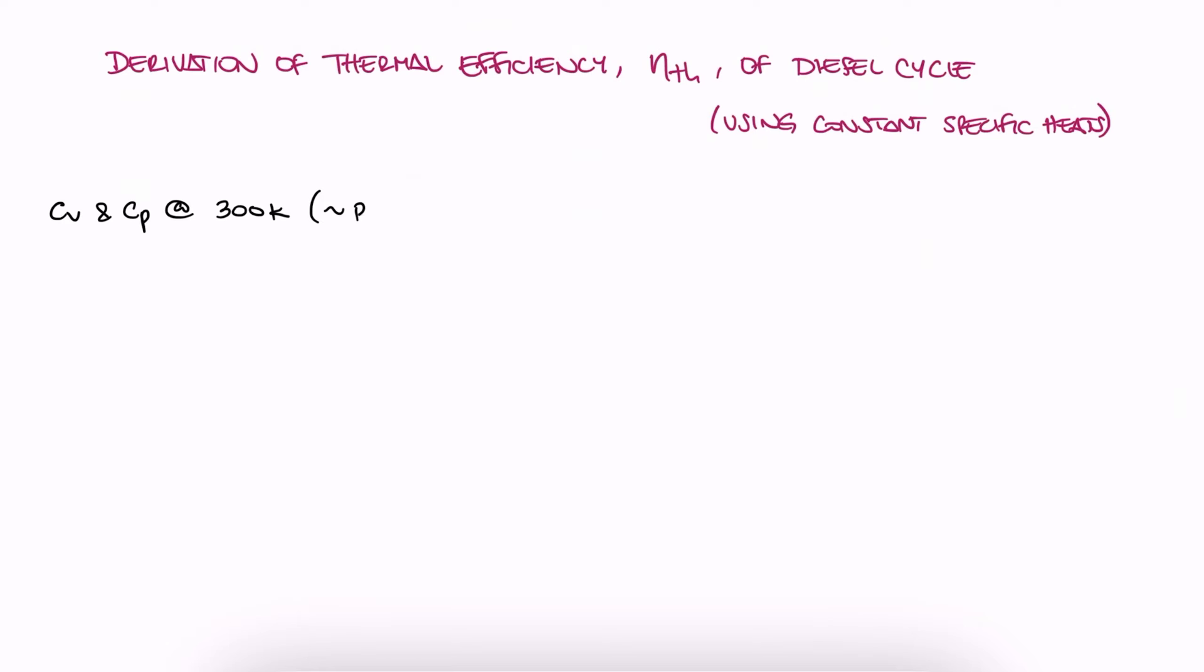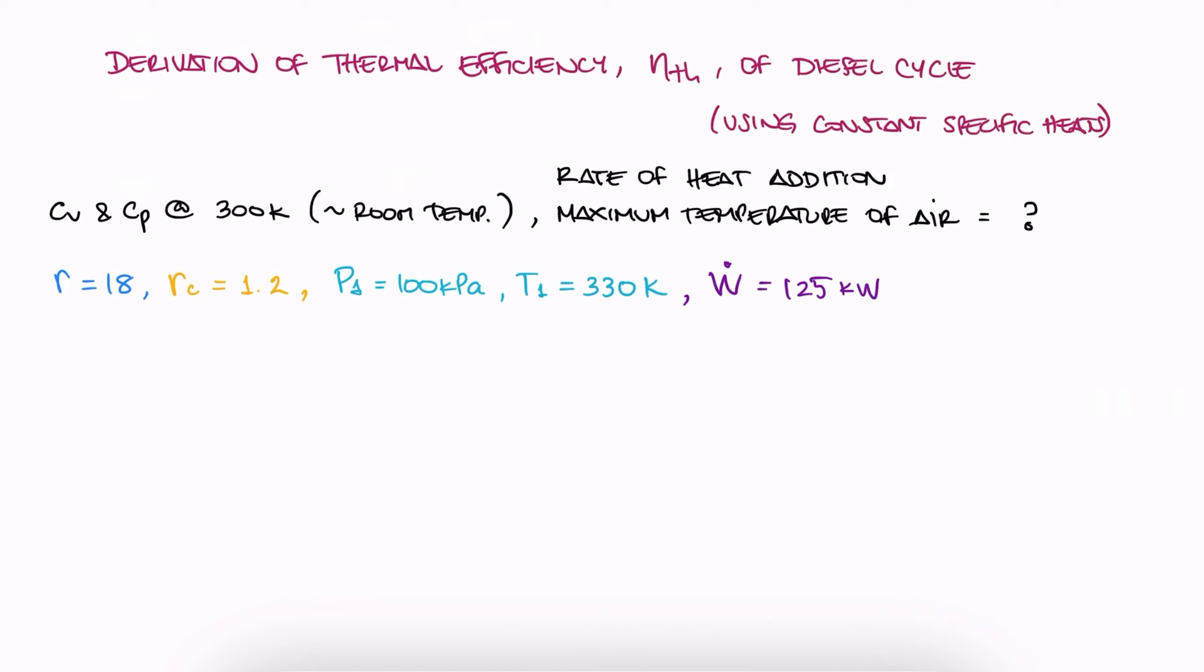Using constant specific heats at room temperature, what is the maximum temperature the air reaches in the following diesel cycle? The compression ratio is 18, the cut-off ratio is 1.2, the air comes in at 100 kilopascals and 330 Kelvin, and the power produced is 125 kilowatts. What is the rate of heat addition?